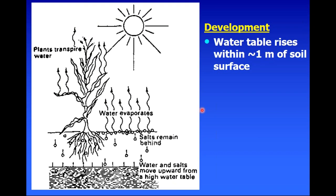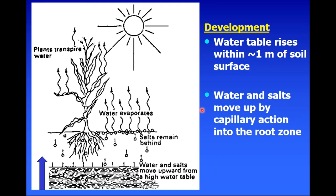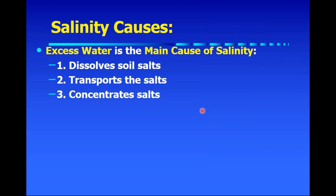To review: first we need development of a water table in a lower relief area, typically within one or two meters of soil surface, then that water moves up by capillary action into the root zone, bringing salts up towards the soil surface. As water evaporates and is used by crops, the salts are left behind. It takes many years for this process to actually cause the formation of saline soils.